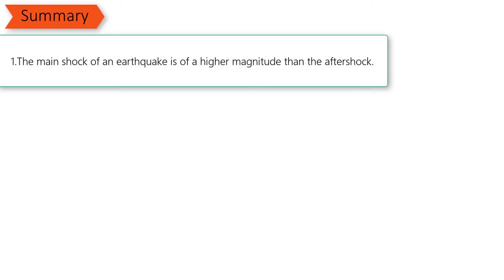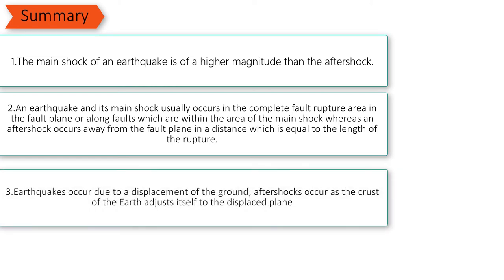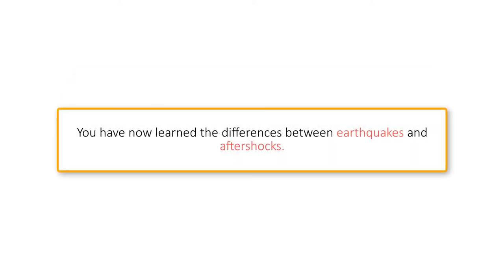Summary: 1) The main shock of an earthquake is of a higher magnitude than the aftershock. 2) An earthquake's main shock usually occurs in the complete fault rupture area in the fault plane or along faults within the area of the main shock, whereas an aftershock occurs away from the fault plane at a distance equal to the length of the rupture. 3) Earthquakes occur due to a displacement of the ground; aftershocks occur as the crust of the earth adjusts itself to the displaced plane.